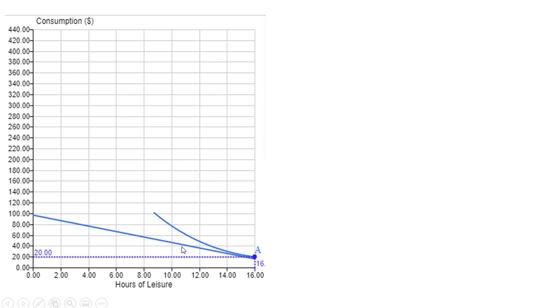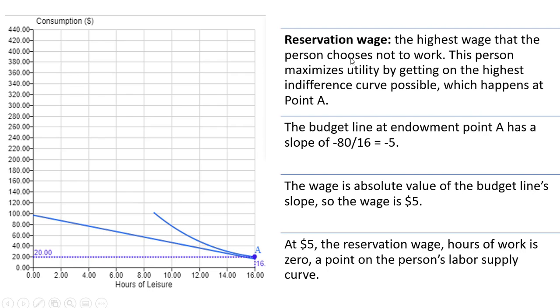This straight line here is the budget line, and this curve-shaped line is the worker's indifference curve. The reservation wage is defined as the highest wage that a person chooses not to work. In this case here, this person maximizes utility by getting on the highest indifference curve possible, which happens at point A. Point A is the endowment point where the person does nothing but leisure, getting 16 hours of leisure.